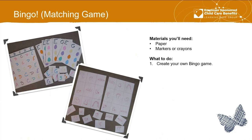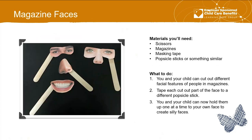Bingo or matching games — you can make your own. One thing my younger son loved was making his own matching games. He actually drew some body parts and made his own matching game. Magazine faces is another fun one: you'll need scissors, magazines, masking tape, and popsicle sticks. You and your child cut out different facial features from the magazine, tape each cutout to a different popsicle stick, and hold them up to your face to make silly faces. You can tell different stories and play fun games — just a fun activity that gets everybody laughing.